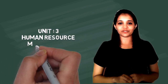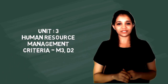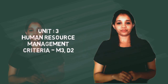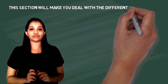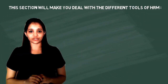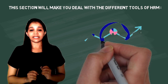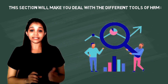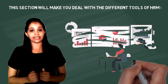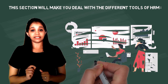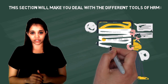Level 4, Unit 3 Human Resource Management, Criteria M3D2. This section will make you deal with different tools of human resource management, such as the scope and plan of study and survey plan, data collection, data analysis, and results and discussions.